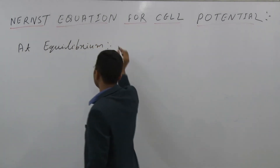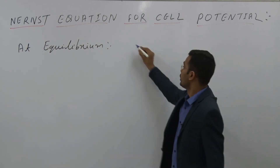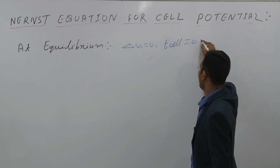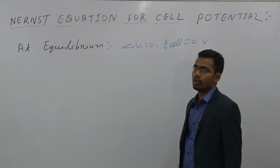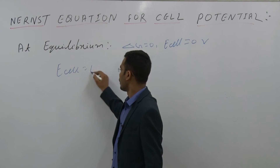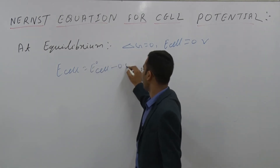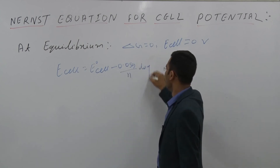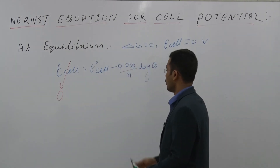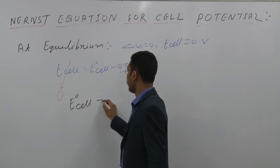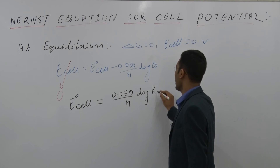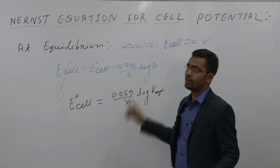At equilibrium, ΔG = 0, which means E_cell = 0 volts. From the Nernst equation: 0 = E°_cell − (0.059 / n) log Q. Therefore, E°_cell = (0.059 / n) log K_equilibrium, and Q is replaced by K at equilibrium.